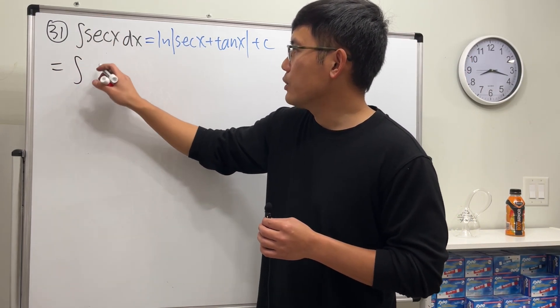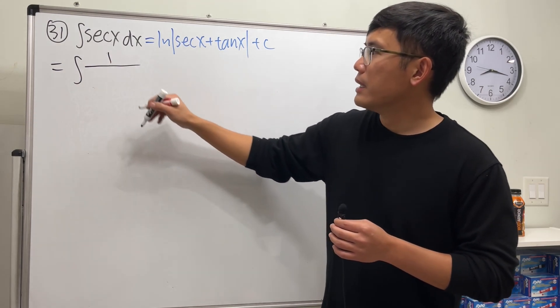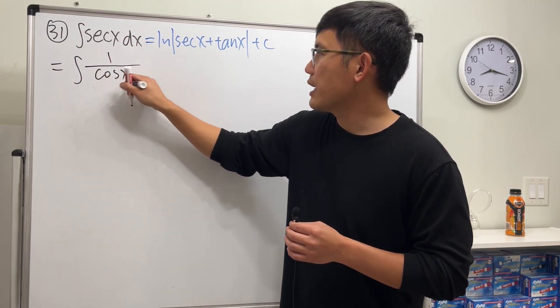Look at this, it's the integral 1 over, on the bottom here, that's written as cosine x.